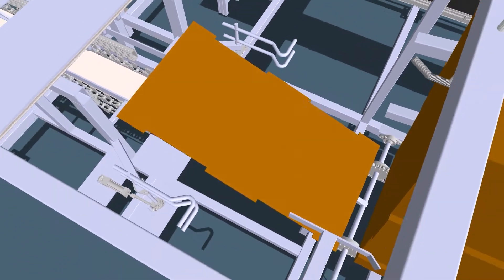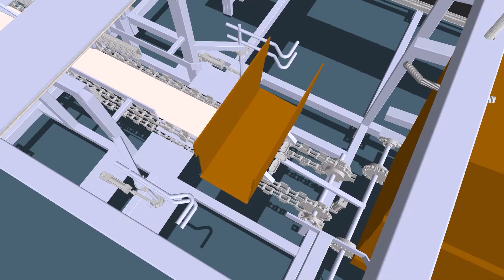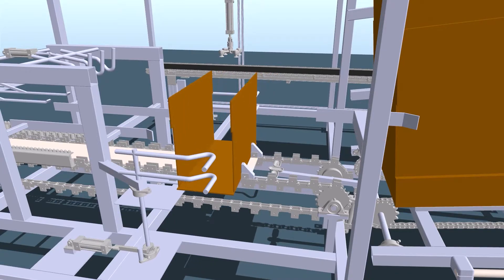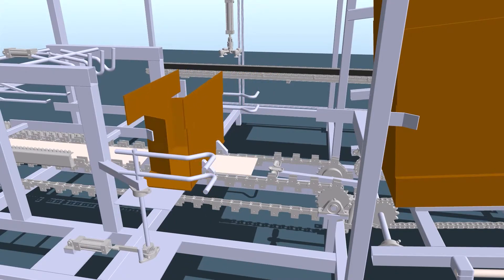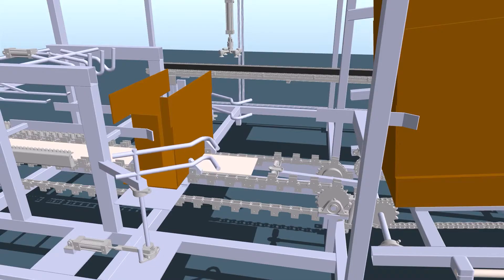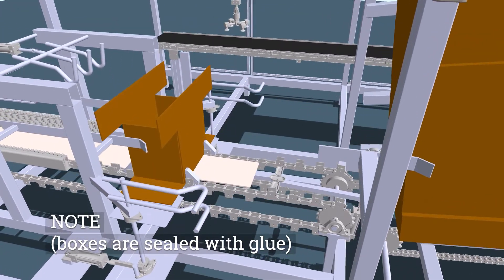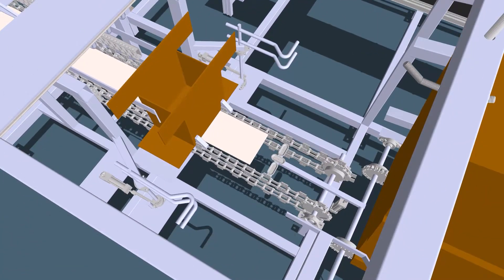When the process begins at station one, station five's case packer simultaneously forms the box. But for the purpose of the simulation and clarity, the box is being formed now. The case packer uses a variety of mechanical and pneumatically actuated cylinders to form the box. Additionally, the box is sealed with glue so that it stays intact.